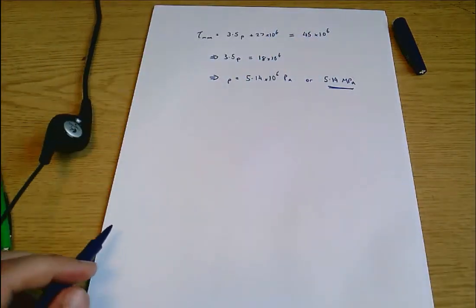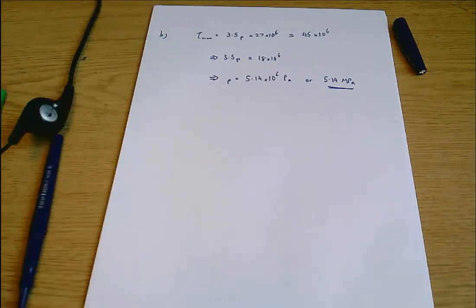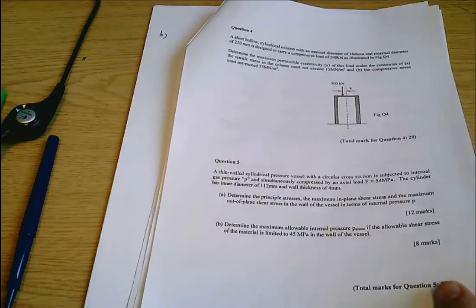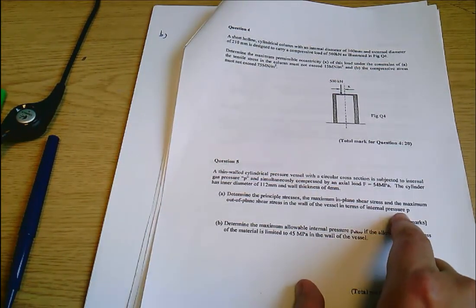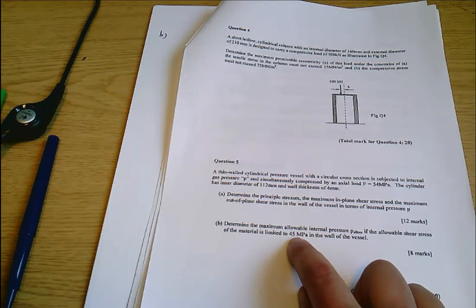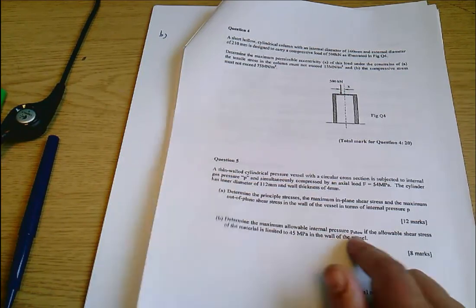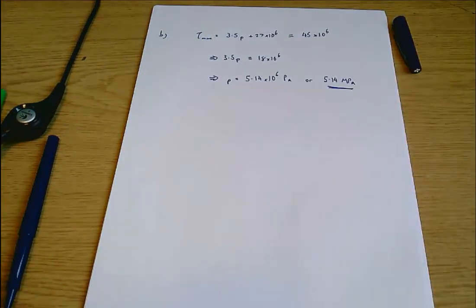So part B there is pretty straightforward if you've done part A. We already had an expression for the maximum shear stress in terms of the internal pressure P. Then we were told that the maximum shear stress is limited to 45 megapascals, so that gives us some maximum allowable internal pressure P which turns out to be 5.14 megapascals, and that is that question.